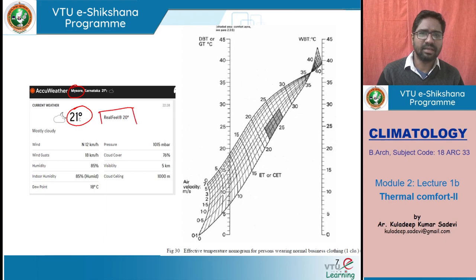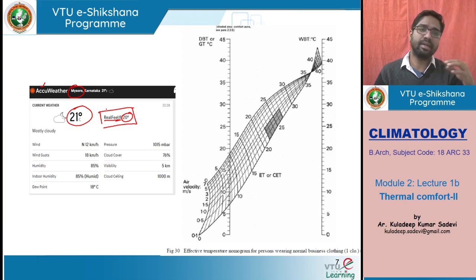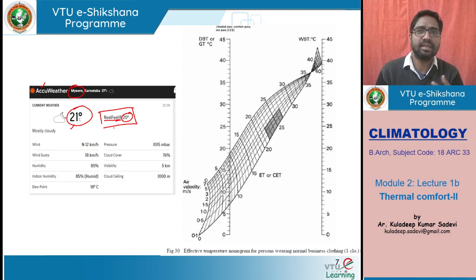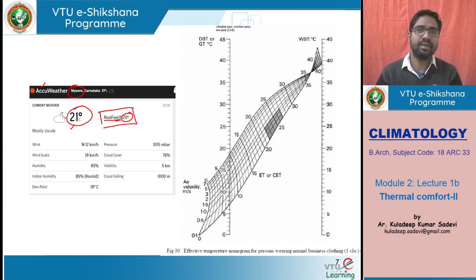This is the weather information for Mysore at a given time. The current weather shows 21 degrees centigrade, but it also says 'RealFeel' as 20 degrees centigrade. RealFeel is a trademark by AccuWeather — they have some procedure to understand what the real feeling is. This means that though the temperature reading from the thermometer is 21 degrees centigrade, the user actually feels the temperature is 20 degrees centigrade at that particular point of time. There may be times where the actual thermometer reading is 30 degrees, but you feel 35 degrees.